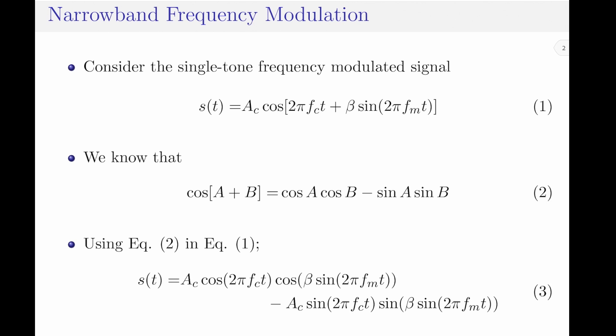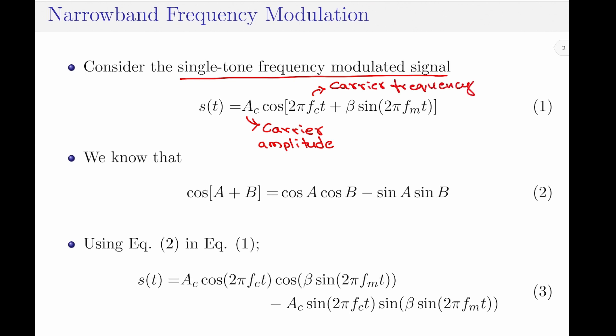Let us consider a single tone frequency modulated signal which is given by s(t) = ac · cos(2π·fc·t + β · sin(2π·fm·t)), where ac is the carrier signal amplitude, fc is the carrier signal frequency, β is the modulation index, and fm represents the modulating signal frequency. The right-hand side of this equation is in the form of cos(a + b), where 2π·fc·t can be considered as a and β·sin(2π·fm·t) can be considered as b.